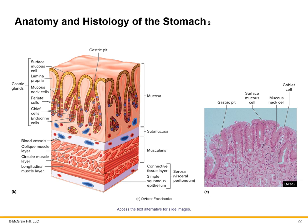Looking at the histology of the stomach, the lumen is visible with rugae present in the longitudinal cut. The mucosa extends from the luminal surface inward. The folds are rugae, and the indents between them are called gastric pits. The gastric pits house several types of secretory cells, which we will discuss next.